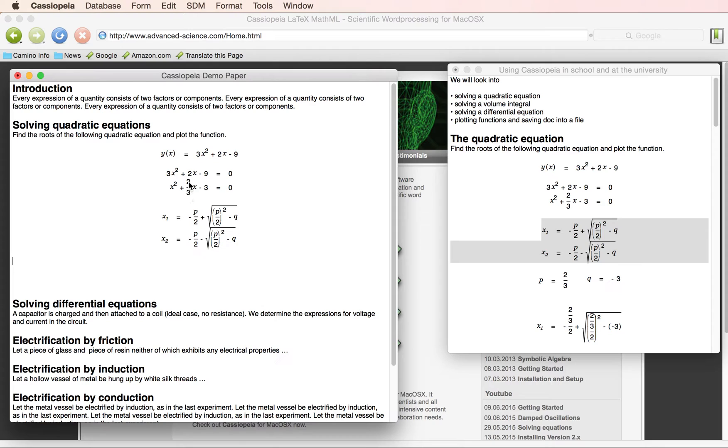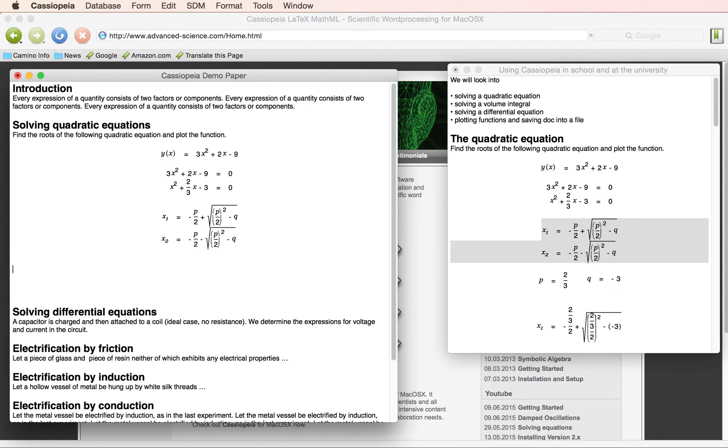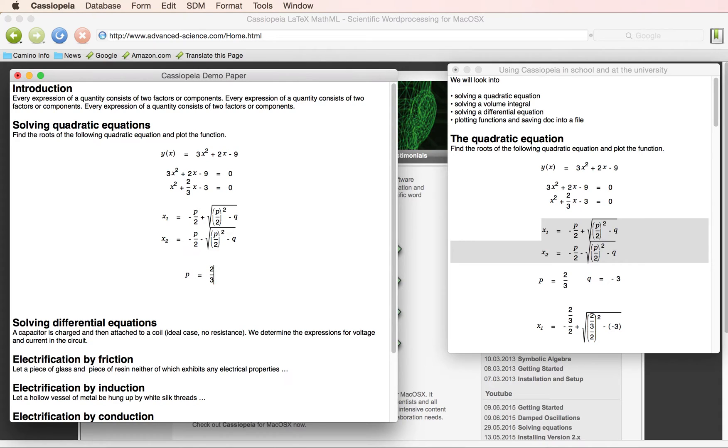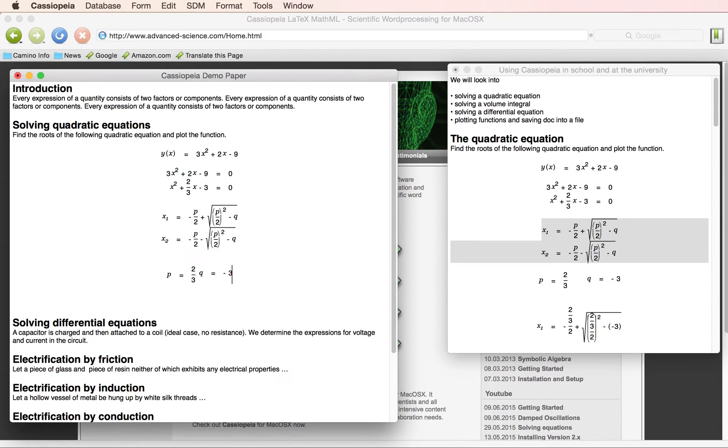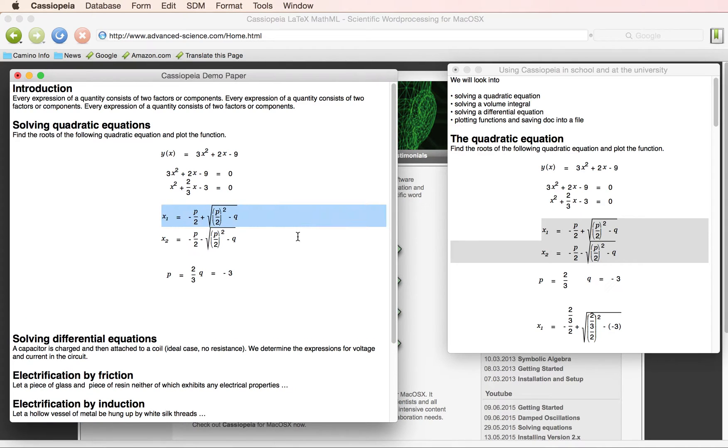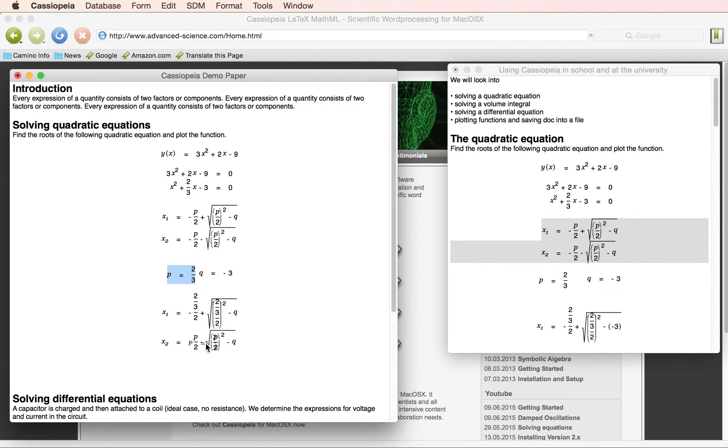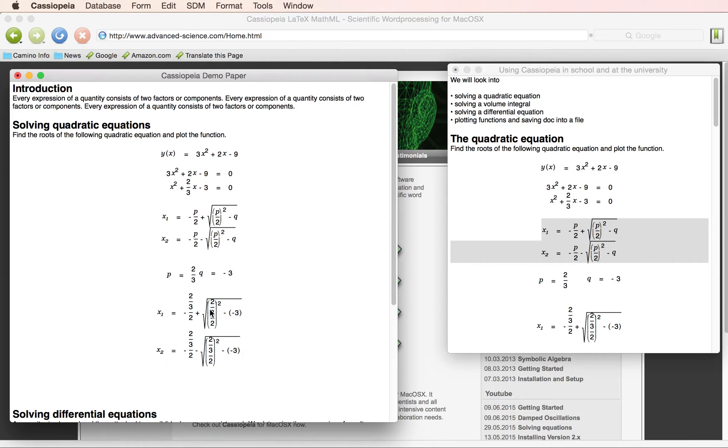In our case we have p with 2 over 3, and q with minus 3. We can simply substitute these expressions into the pq formula via drag and drop, and calculate the results with a command-alt double-click.